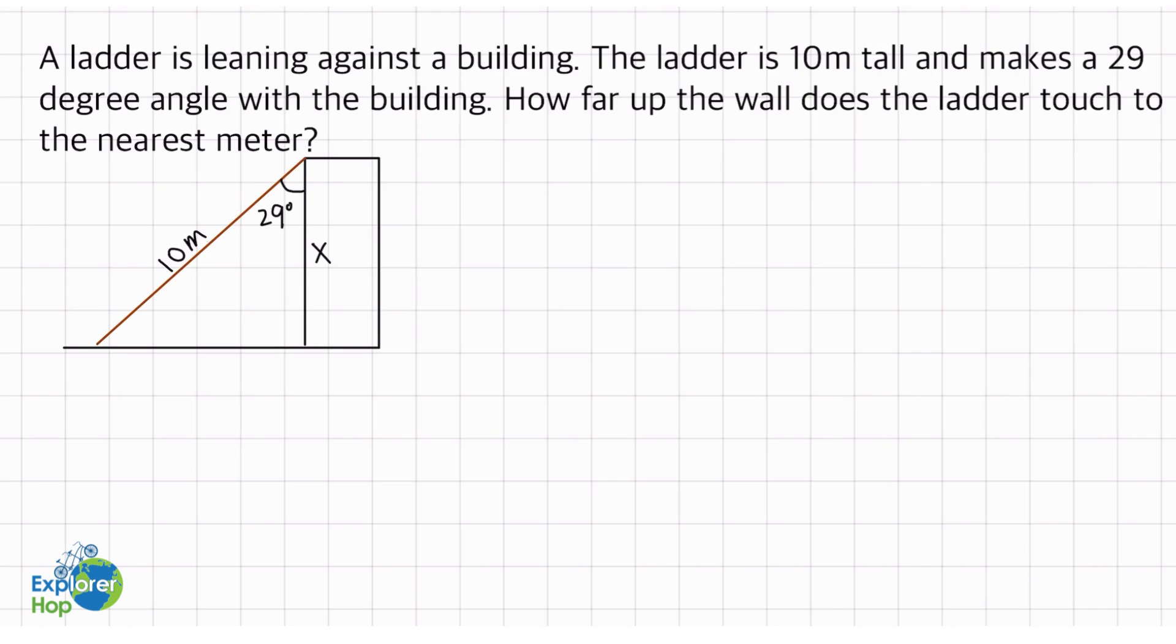Because we are given the hypotenuse of this triangle and this triangle is also a right triangle because the building is straight 90 degrees, and we have the adjacent angle to the x value, we'll be using the cosine law.